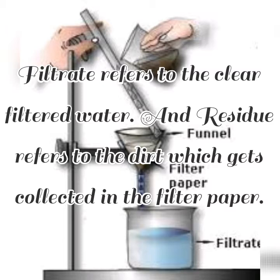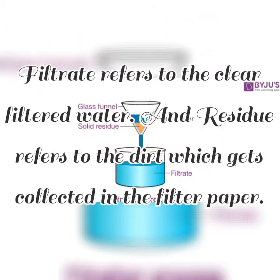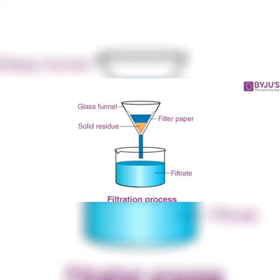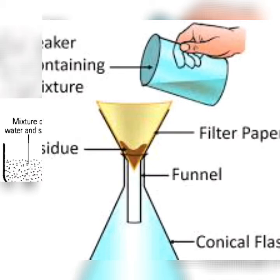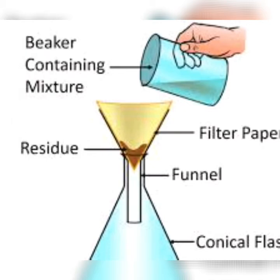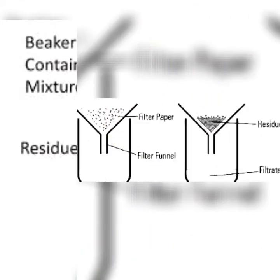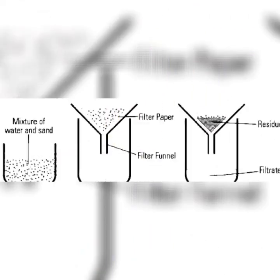In filtration, water containing insoluble substances is poured into a funnel having a cone of filter paper. A filter paper has very tiny holes in it — so small that you cannot even see through them. It can be used to filter out the mud to get water free from insoluble substances. The insoluble substances are caught in the filter paper. So the clean water is collected in the glass and all the mud particles are left behind on the filter paper.